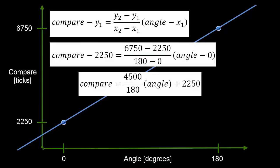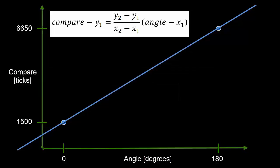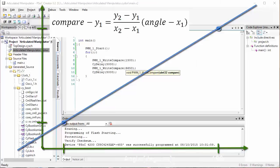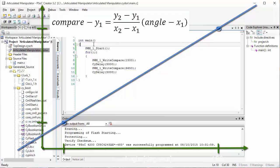Let's look back at our plot of the line. We now know that 1,500 ticks corresponds to zero degrees and 6,650 ticks corresponds to 180 degrees. Let's plug those numbers into our equation: x1 = 0, x2 = 180, y1 = 1500, y2 = 6650. We now have an equation that converts any angle in degrees into a number of ticks. Let's go back to the code and use this to set the servo angle to anything we want.